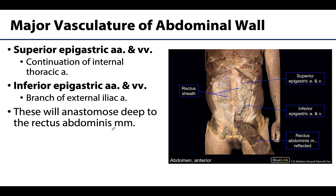The major vascular supply is deeper: the superior and inferior epigastric arteries and veins, which travel closely together. The superior epigastric artery is one of the two terminal branches of the internal thoracic or internal mammary artery. It anastomoses with the inferior epigastric artery, which is the major supplier of blood to this region and a branch of the external iliac. The inferior epigastric branches off just superior to the inguinal ligament, communicating with the superior epigastric deep to the rectus abdominis.